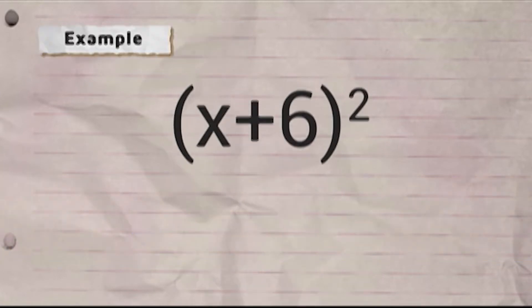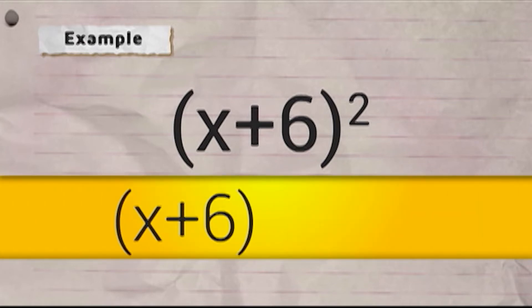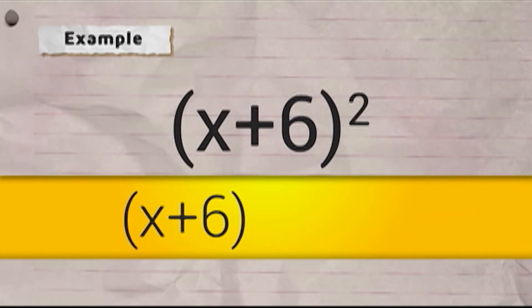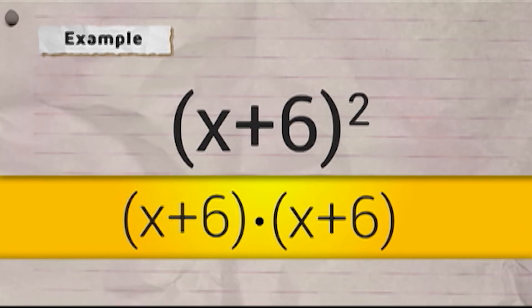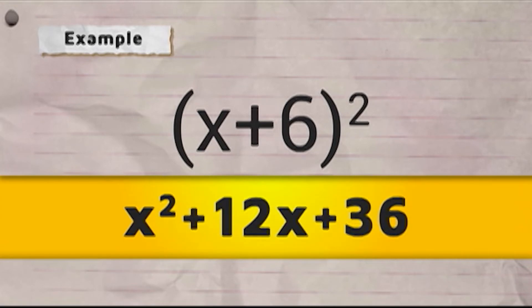For example, quantity X plus 6 raised to 2 equals quantity X plus 6 times quantity X plus 6 equals X squared plus 6X plus 6X plus 36, which equals X squared plus 12X plus 36.